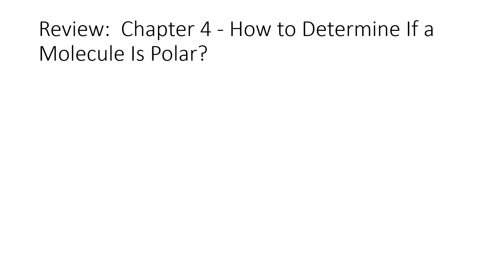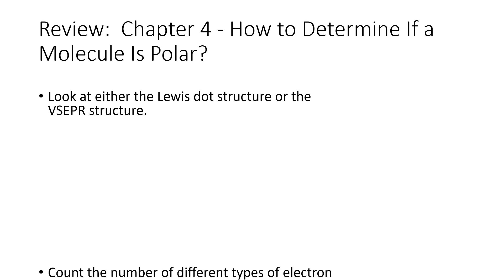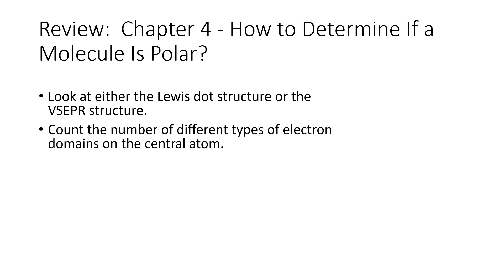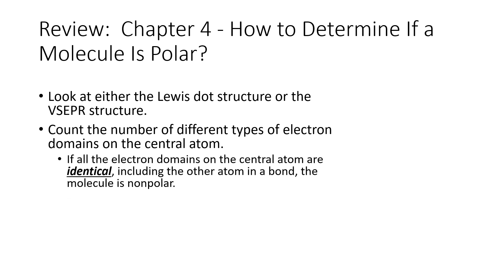If you'll think back to chapter four, how was it that we determined if a molecule is polar or not? First of all, we need to know what the structure of the molecule is. We need to know which atom is connected to which other atom, and in particular, what atom is in the middle of the molecule. We can do that by looking at either the Lewis dot structure or the VSEPR structure. Then identify that central atom and count how many different distinct electron domains are on that central atom.